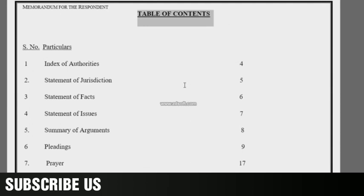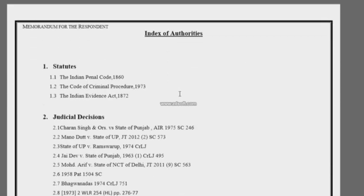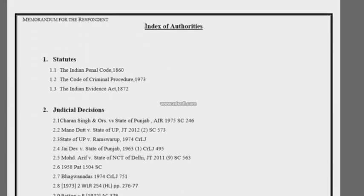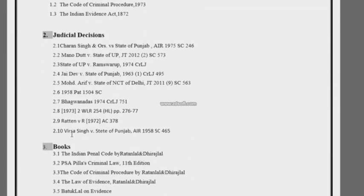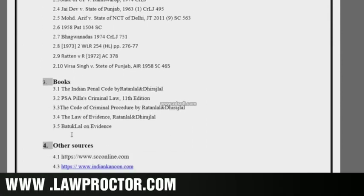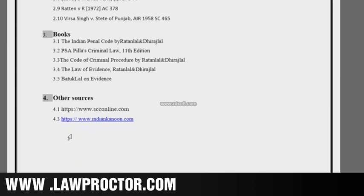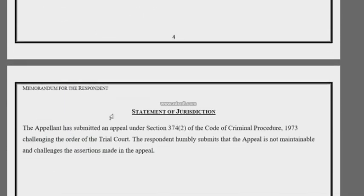Fourth is for the index of authorities, which comprises of statutes, judicial decisions, books, and online databases. Fifth comes the statement of jurisdiction.